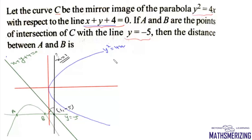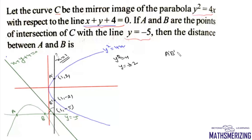Now putting x=1 into y²=4x, we get y²=4, so y=±2. This gives the points (1, 2) and (1, -2), which are A' and B' respectively. The length A'B' is the same as length AB, which in this case is simply 4.